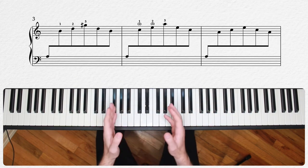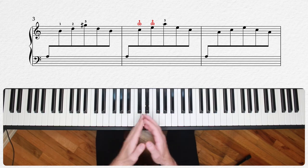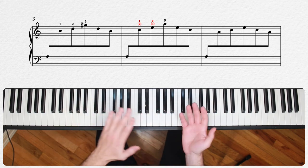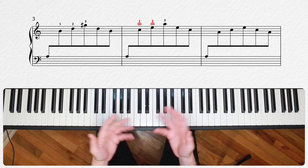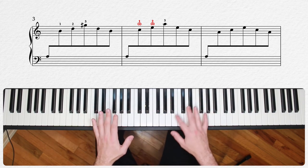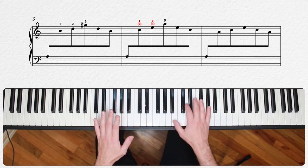Now one sidebar note on that. Notice down in measure four the fingering in parentheses. That is optional fingering you can use rather than the primary fingering. And I actually like it better. I like the less movement of using two and three on the C and E instead of having to move your entire hand up a step to play with one and two.